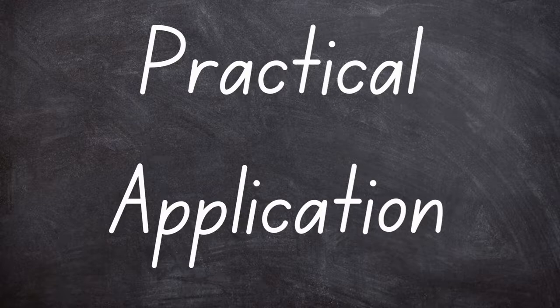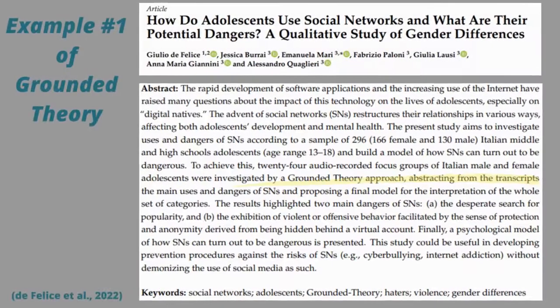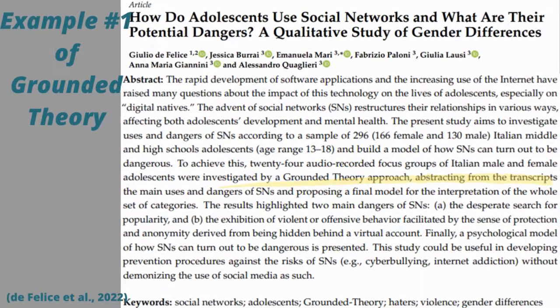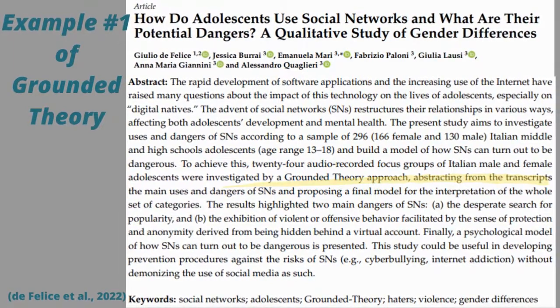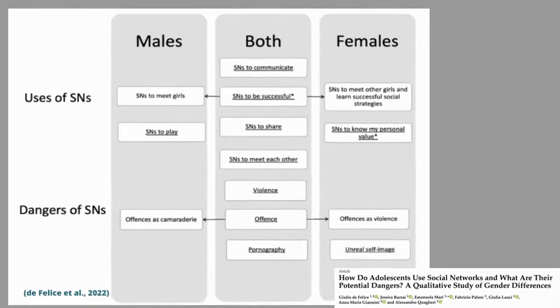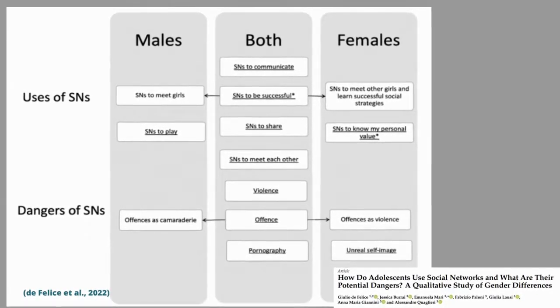Now we'll cover a couple of examples of grounded theory. The first example is about the dangers of adolescents using social network platforms from the perspective of gender differences, titled How do adolescents use social networks and what are their potential dangers? A qualitative study of gender differences by DeFelice et al. The study involved focus groups of 296 male and female Italian adolescents. Researchers used a cyclical systematic design model of open, axial, and selective coding of data categorization and memos until saturation of the data was achieved. The report includes two diagrams central to the theory, a hallmark of grounded theory methodology.